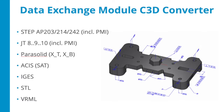The Data Exchange Module C3D Converter can read and write file formats including STEP, JT, Parasolid, ACES, IGES, STL, and VRML. It's very important that we support Product Manufacturing Information (PMI) for STEP and JT. We also support our own C3D file format. We do not support native file formats from different CAD systems — only exchange formats.